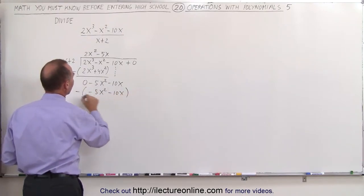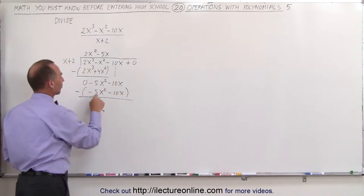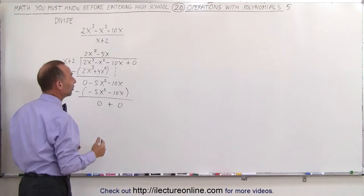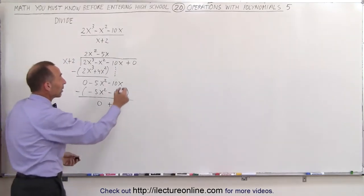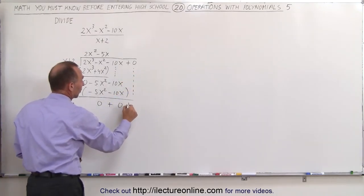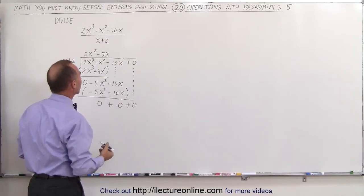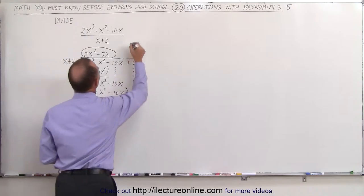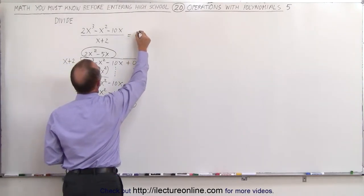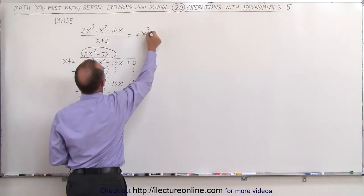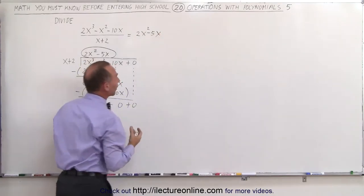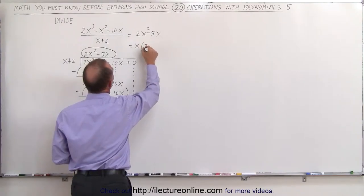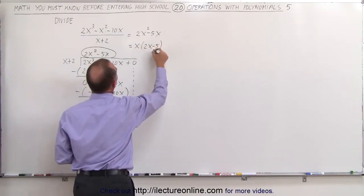When we subtract this from what's right above that, subtract this from that gives us 0, subtract this from that gives us 0, which means 0 remainder. Because when I drop down the next number, which is also plus 0, we have a 0 remainder, which means that this is the result of our division. We can then say that this can be written as 2x squared minus 5x, or if you want to factor out a common factor, you can say this can also be written as x times 2x minus 5.